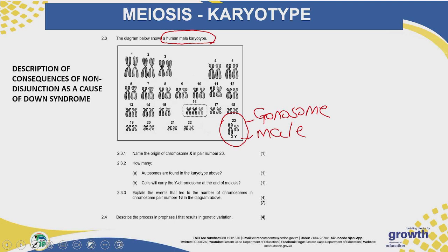Let's go to the questions. It says: name the origin of chromosome X in pair number 23 — where would that chromosome have come from? Remember, during fertilization an egg fuses with a sperm cell. So it would have come from the ovum nucleus — the nucleus of an ovum of the mother. You can't just say it came from the mother; you need to say where in the mother it came from — it came from the ovum nucleus. How many autosomes are found in the karyotype above? Your autosomes are the chromosomes found at positions 1 to 22 in the human karyotype.